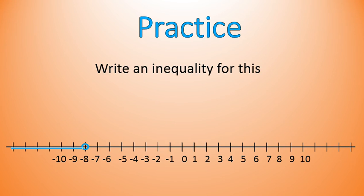In this one, I'm actually giving you the graph and asking you to write an inequality. What would the inequality for this graph look like? If you paused and came back, maybe you said: I see negative 8, and the arrow goes to the left, so it's everything less than negative 8. Therefore, I would write x is less than negative 8. That is the correct graph and inequality.